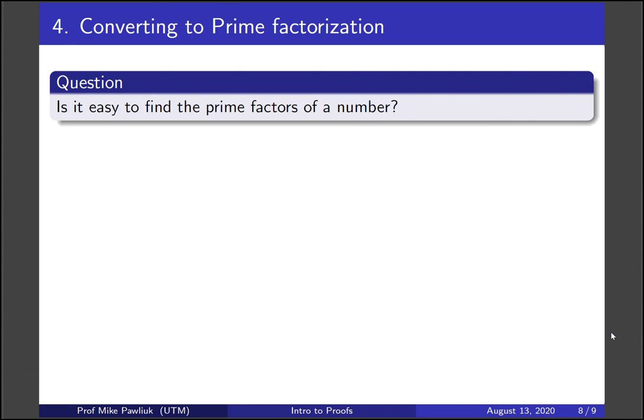This leads us to a natural question. If it's easier to find the GCD when numbers are given in their prime factorization, is it easy to find the prime factors of a number? We'll take a moment to make a guess.